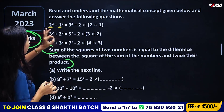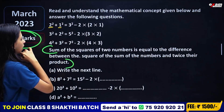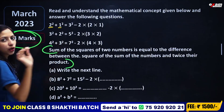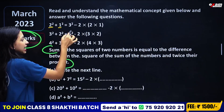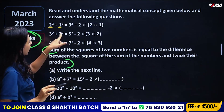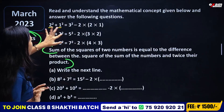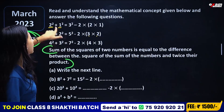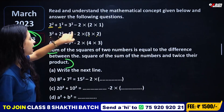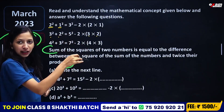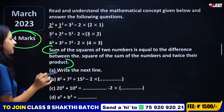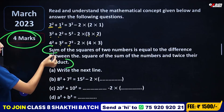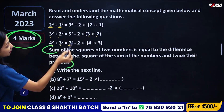3 squared plus 2 squared is equal to 5 squared minus 2 into 3 into 2. Here is 2, here is 3, and here is 5. There is a connection: we add the two numbers to get the sum. Then, 4 squared plus 3 squared — we add 4 and 3 to get 7 — so 4 squared plus 3 squared is equal to 7 squared minus 2 into 4 into 3.